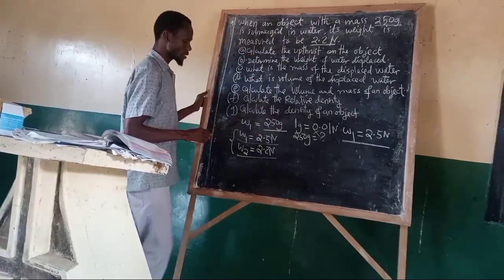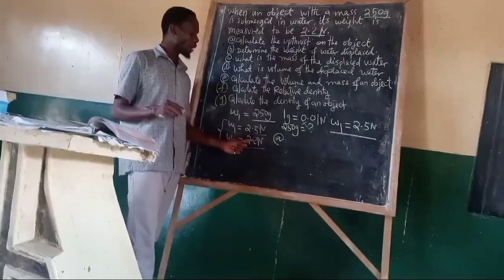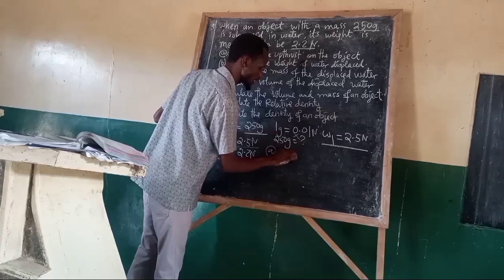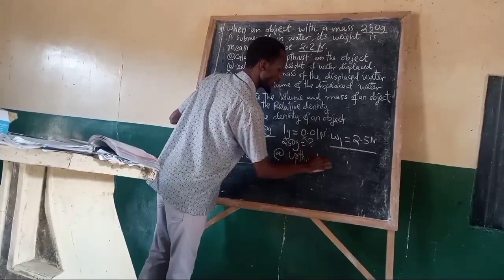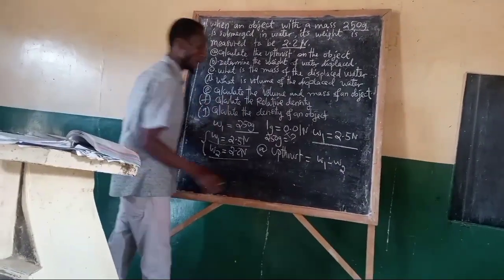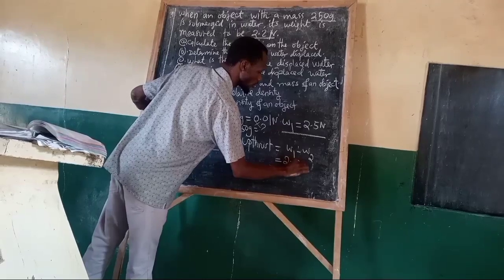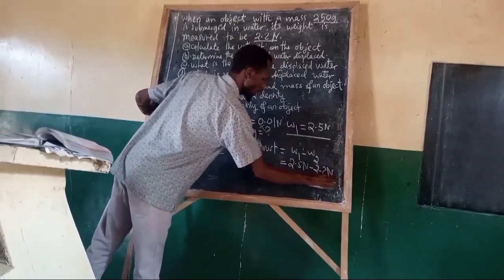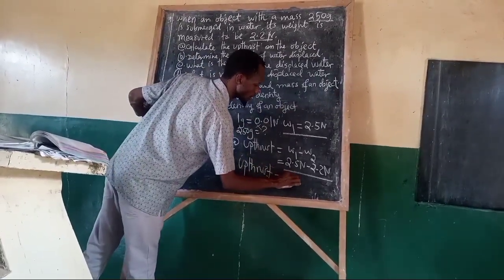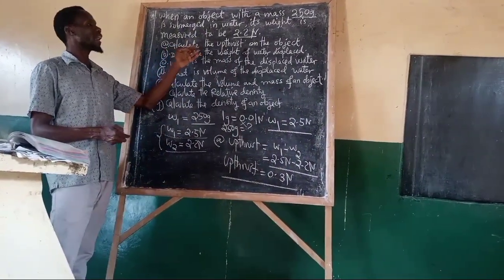The first question, A, is to determine the upthrust. Upthrust is the difference between the true weight and what we call the apparent weight. That is why we say upthrust is equal to W1 minus W2 — that is the weight of an object in air minus the apparent weight. This is equal to 2.5 Newton minus 2.2 Newton. Therefore, the upthrust will be equal to 0.3 Newton. This is the upthrust, and that was the first question.